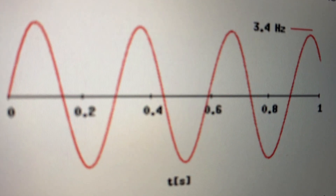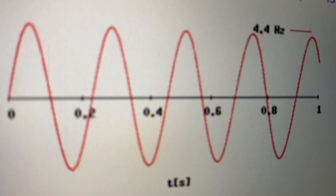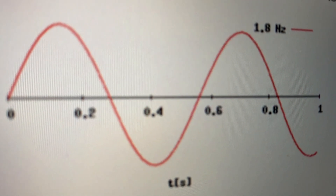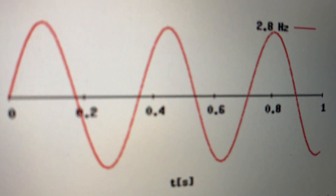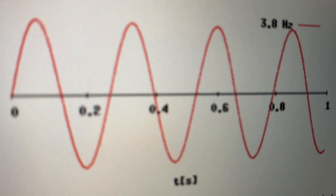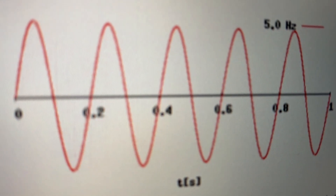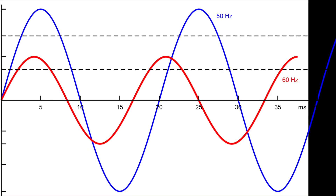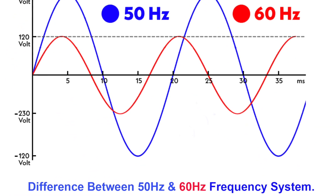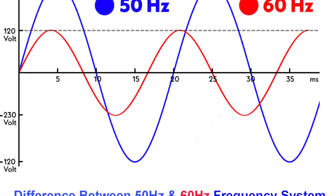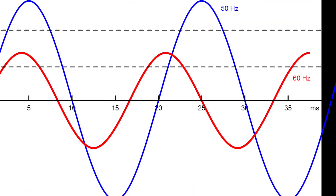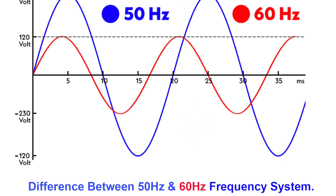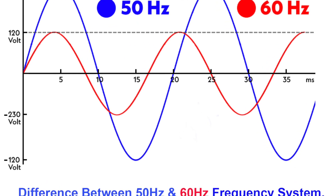50 Hz means the rotor of a generator turns 50 cycles per second, and that the current changes 50 times per cycle. With 50 Hz, voltage bounces between positive to negative and then negative to positive. With 60 Hz, the rotor of a generator turns 60 cycles per second, which means the current changes 60 times per cycle. Voltage changes in a similar way to 50 Hz.